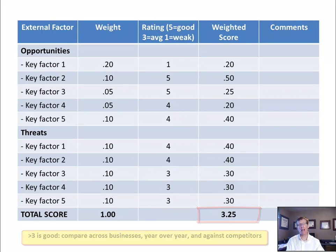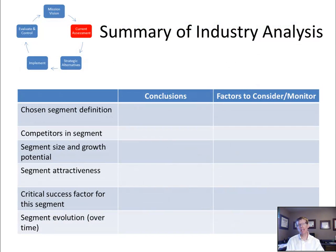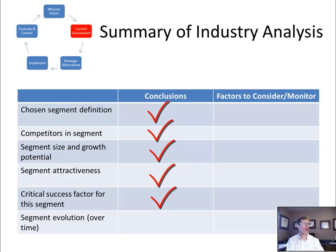By the time we have completed our external analysis, we should be able to document our position in the market and the overall attractiveness of the particular market — specifying our chosen market segment, identifying who the competitors are, specifying segment size and growth potential, describing the attractiveness of the segment, identifying critical success factors, and answering how this segment is likely to evolve over time, along with what core competencies are required to serve this segment into the future.